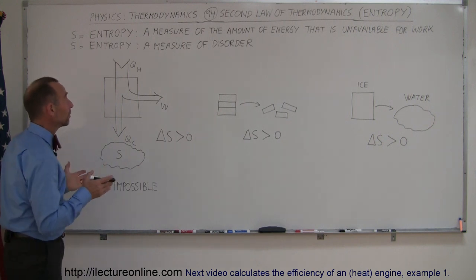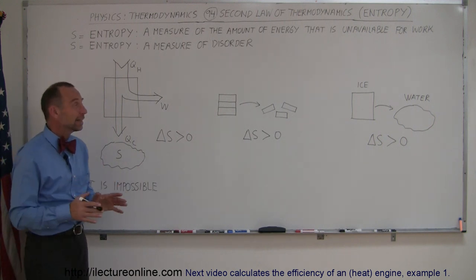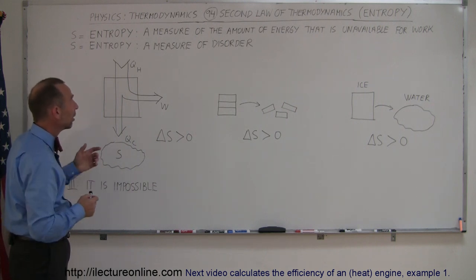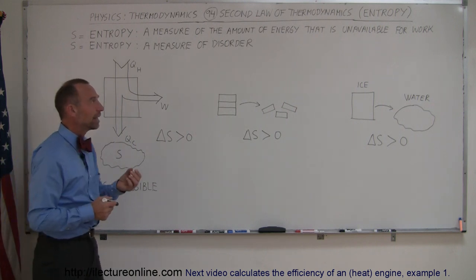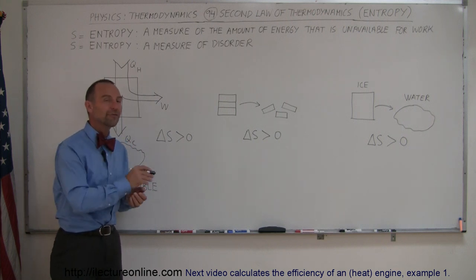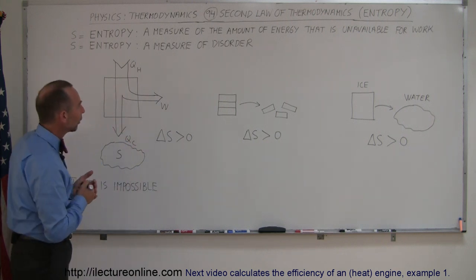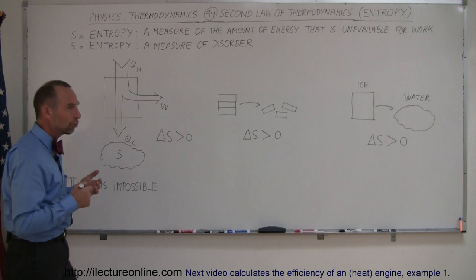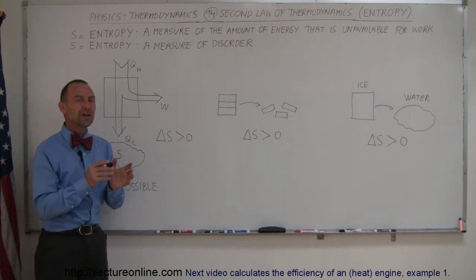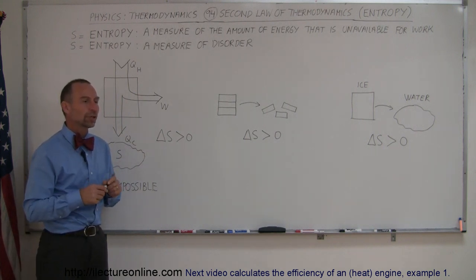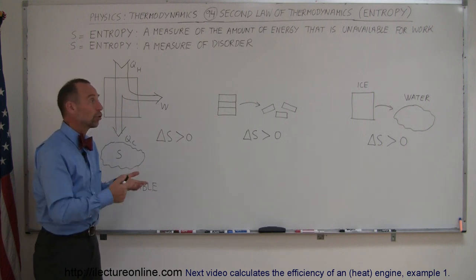Now, what does entropy mean? Well, there's different ways of defining it, and I put a couple of definitions on here. One of them is a measure of the amount of energy that is unavailable for work. The other one says it's a measure of disorder. So it's a measure usually of how much energy is no longer available in the universe to do work.